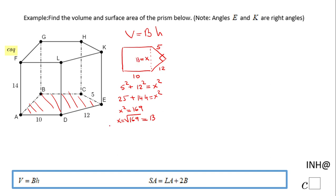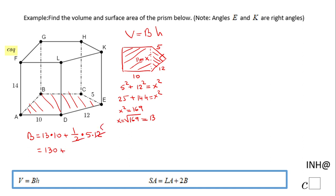Now we know x is 13. For finding the area of this base, I'm going to have this rectangle which is 13 by 10 — so 13 times 10 — plus this right triangle, which is one half times 5 times 12. That gives us 130 plus 30, so the area of the base pentagon is 160 square units.